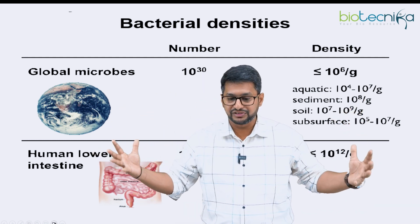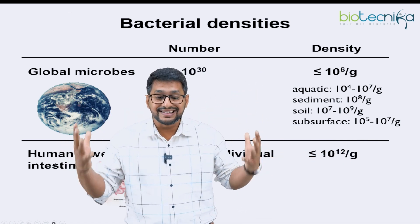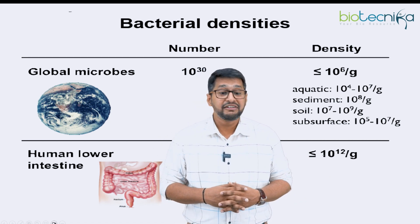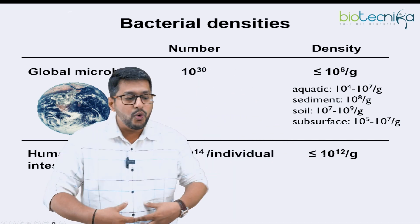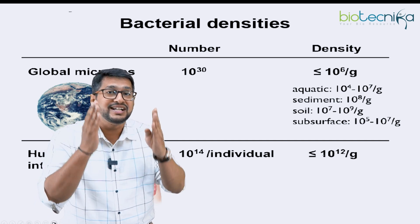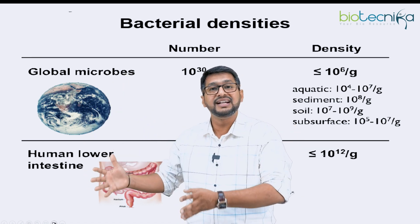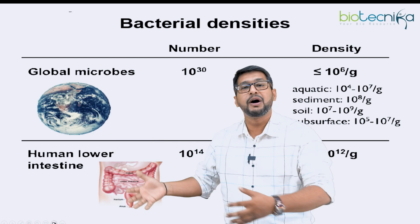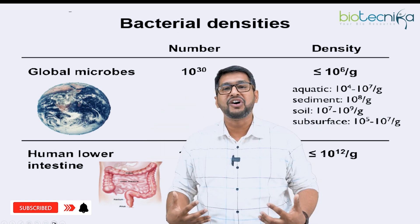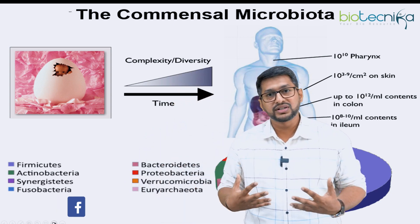When looking at global microbial densities, the entire global microbes can be considered as 10 to the power of 30 — across aquatic, sediment, soil, and subcellular systems. However, just in the lower intestinal tract of homo sapiens, it is more than 10 to the power of 14 per individual. So half of all organisms on the entire globe are just in my system — for a microorganism, my entire body acts as a universe. There is a commensal association between microorganisms and the human system.